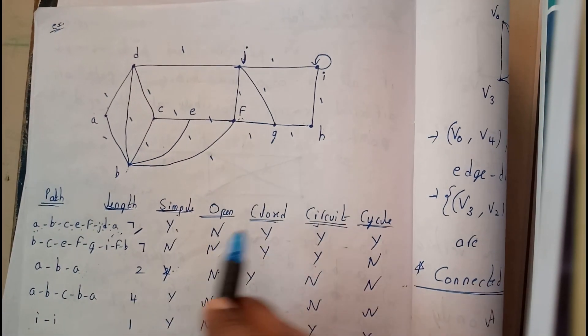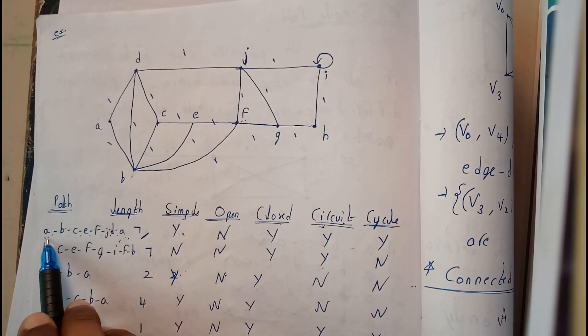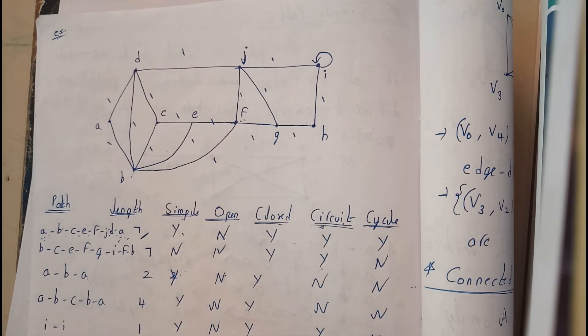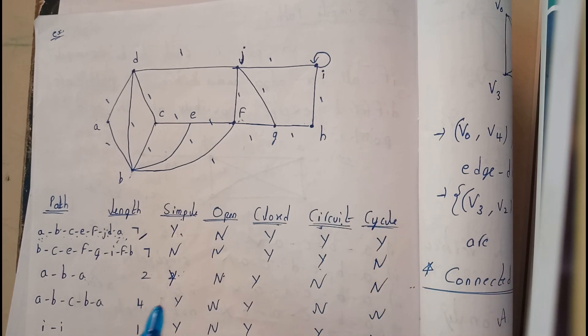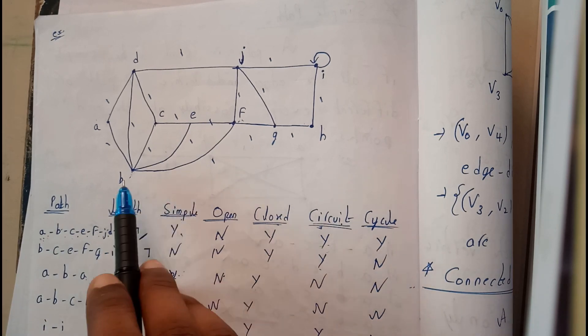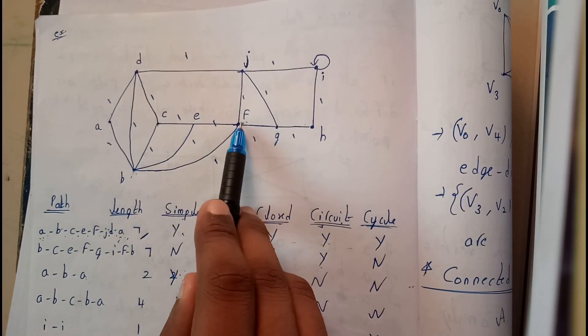When we check for a circuit, a circuit should not have any repeated edge. Is there any repeated edge here? No, there is no repeated edge. We have travelled C to E, E to F, F to J, J to D, D to A.